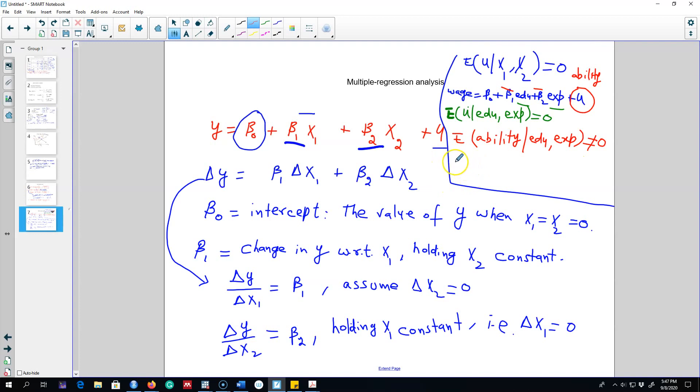If this assumption is not met then our beta hat parameters beta 1 or beta 2, those are not equal to the actual beta. We'll get biased parameters and this is what we don't want. Remember we want to measure the actual effect of say education on wages. But this effect will not be true in the sense that it will be biased. We'll keep talking about this problem in this class.